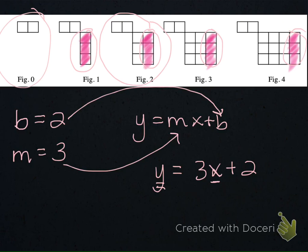We can test that for figure 4 as well. So taking a look, figure 4 has these 3, another 3, 6, 9, 12, 13, 14. So if I put 4 in for x, I should get 14 out for y. 3 times 4 is 12, plus 2 is 14. Sure enough, this rule works.